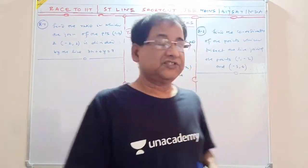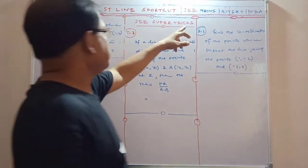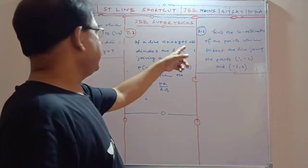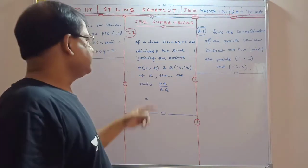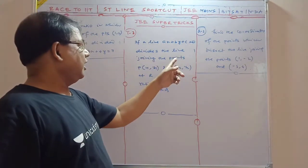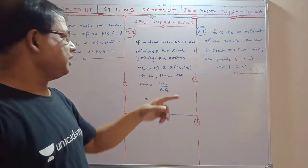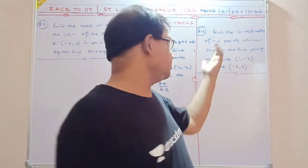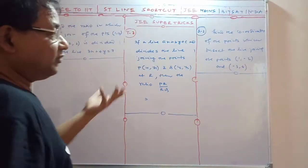It is very very important for your JEE exams. So this is JEE super tricks. This trick is to clear each type. If the line Ax + By + C = 0 divides the line joining the points P and Q at R, then the ratio—if you know that one, within a second you can find out trisections.